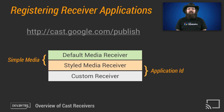The one that doesn't require registration is called the default media receiver, and all it does is play simple media — no styling, no customization, and no application ID. There's no way to modify its behavior. The styled media receiver application does require registration and allows for some customization; it's for playback of simple media. Custom receivers are applications that require registration and are for building advanced media players or other types of TV applications like games.